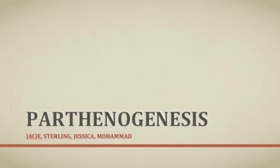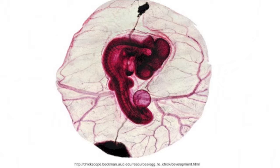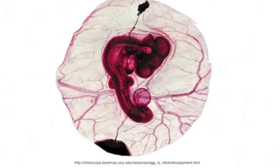Parthenogenesis is defined today as the development of an unfertilized gamete into a new individual. Here you can see the differences between normal fertilization and parthenogenesis. A parthenogenetic egg cell can become diploid either through nuclear fission or through a restitution division.